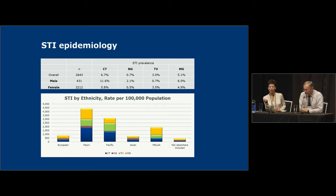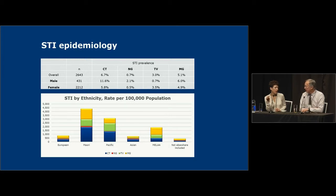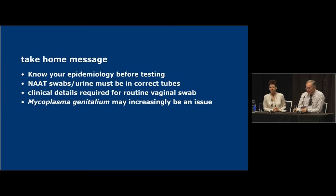Take-home message: know your epidemiology before testing. A NAT swab is a nucleic acid amplification test — PCR is just one form. Clinical information is critical for laboratory interpretation, just like a radiologist cannot interpret a chest x-ray without a history. Regarding mycoplasma genitalium testing, we may be able to get that organized in the future. Common cold — antibiotics are no use. A randomized trial of 10 days of Augmentin for colored sputum made no difference. About one in a thousand of those patients ended up in hospital whether they got antibiotics or not. Most people in New Zealand get antibiotics for coughs. You should say to patients: it takes about four weeks for a cold to go away.